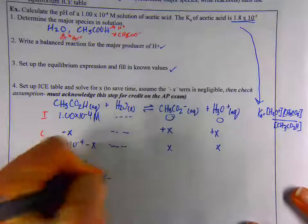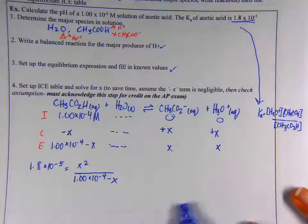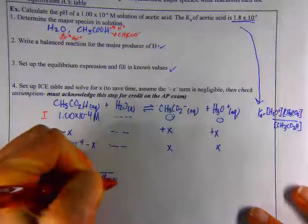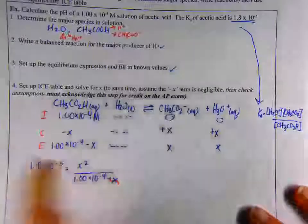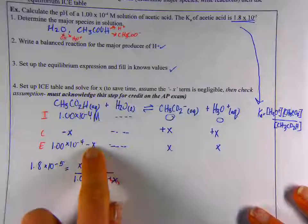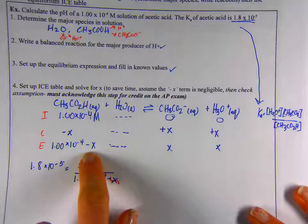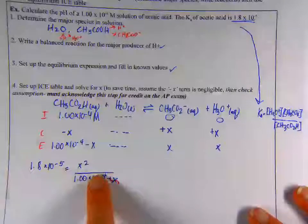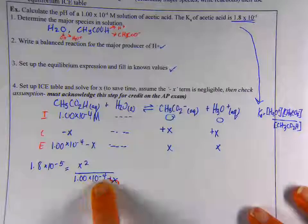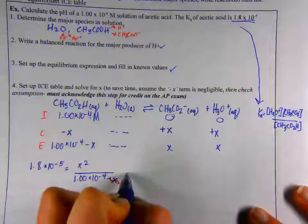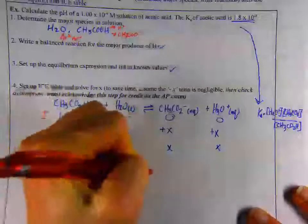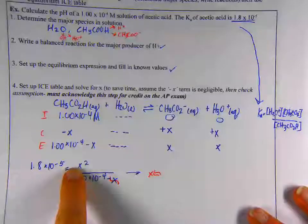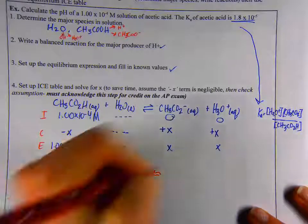To solve for X here, this would turn into kind of a nasty quadratic. So what I'm going to do is the shortcut. I'm going to assume that this minus X is negligible. Acetic acid is a weak acid. Very little of it dissociates to form these products. So I'm going to say that this X that's being lost is a very tiny amount. When I go to solve, it's super easy. I just multiply both sides by 1 times 10 to the negative 4, and then take the square root. The X value that I get, X is approximately equal to 4.2 times 10 to the negative 5.